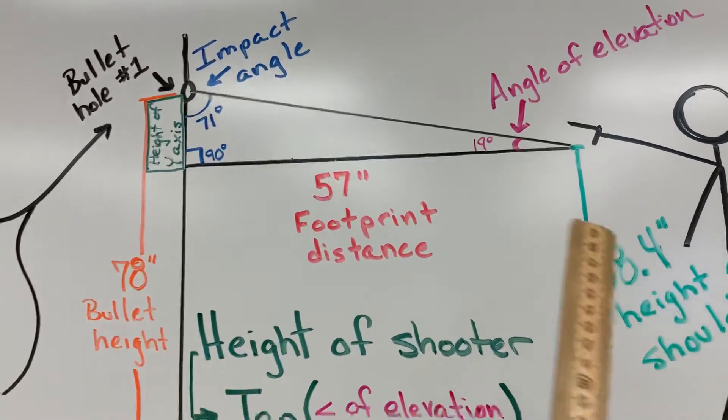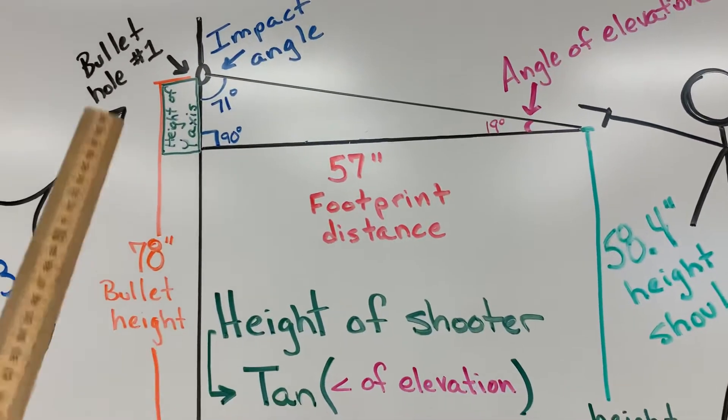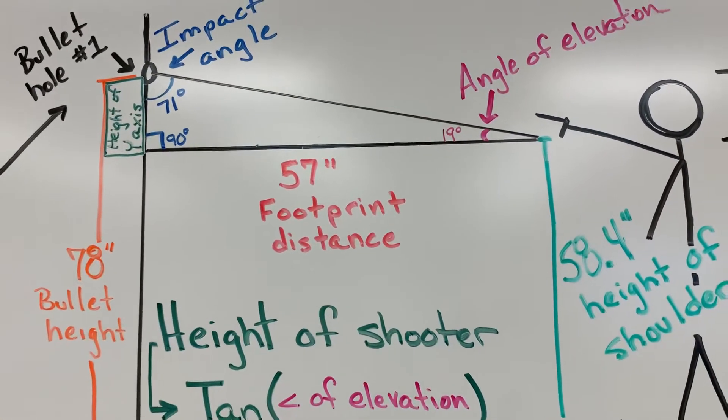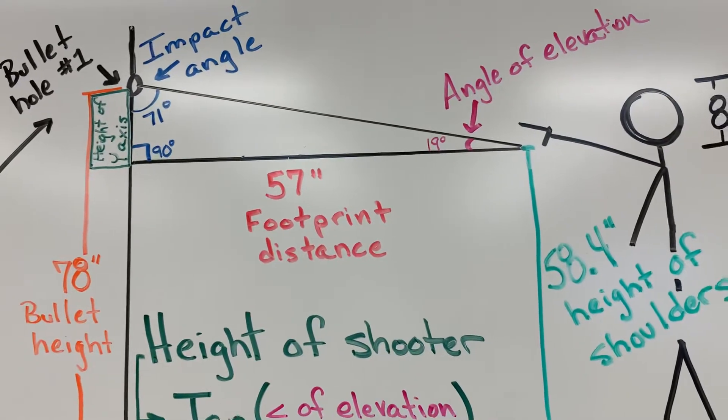So if you look at this diagram, you'll see we've got the bullet height length from the floor, we've got the footprint distance, we've got some cool pieces of information here that's going to help us figure out the height of the shooter.